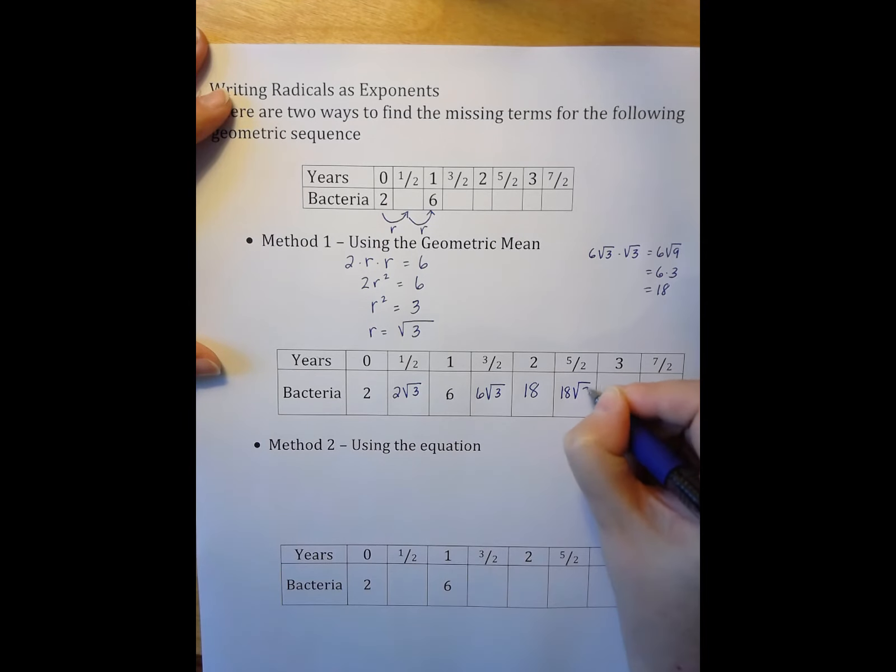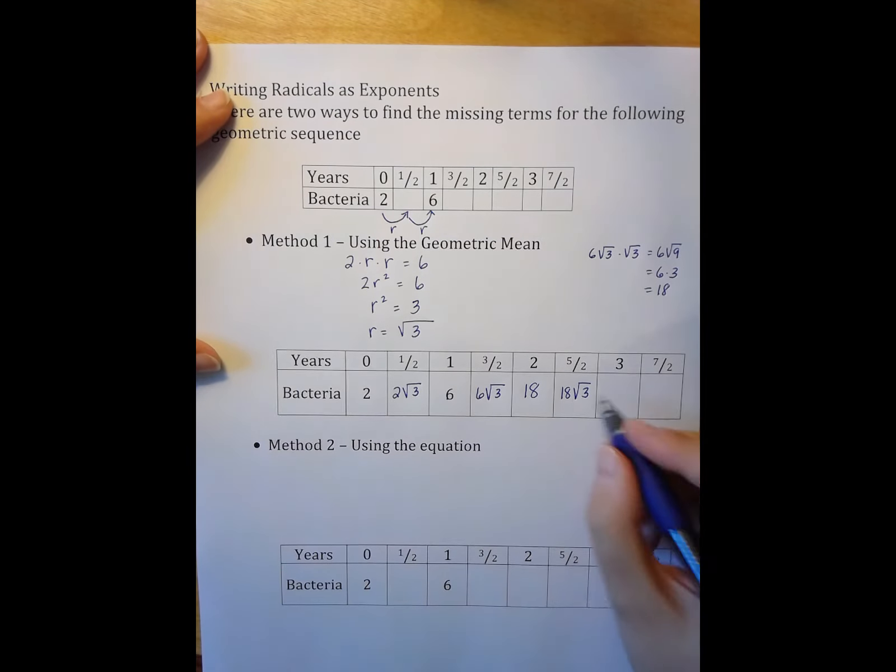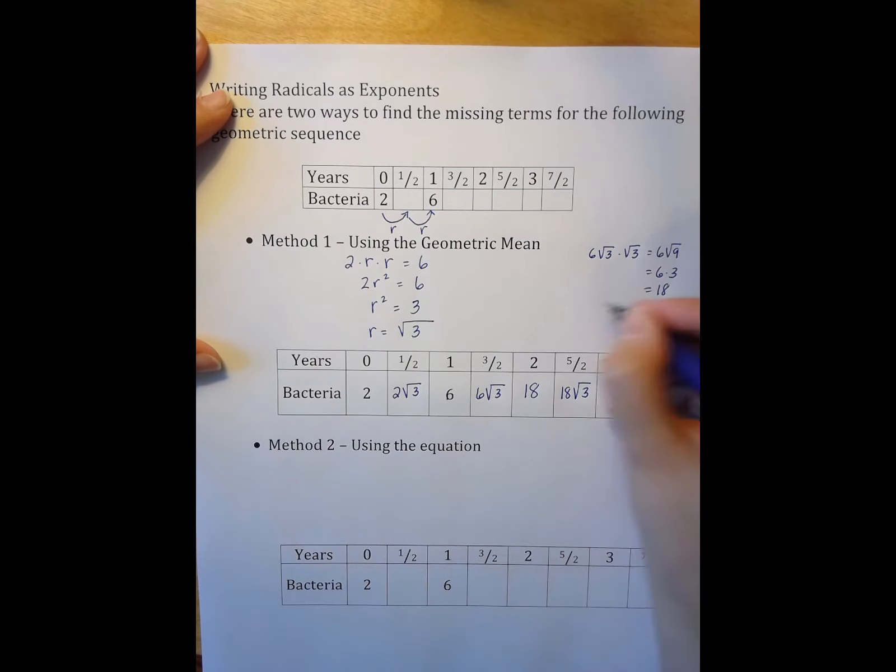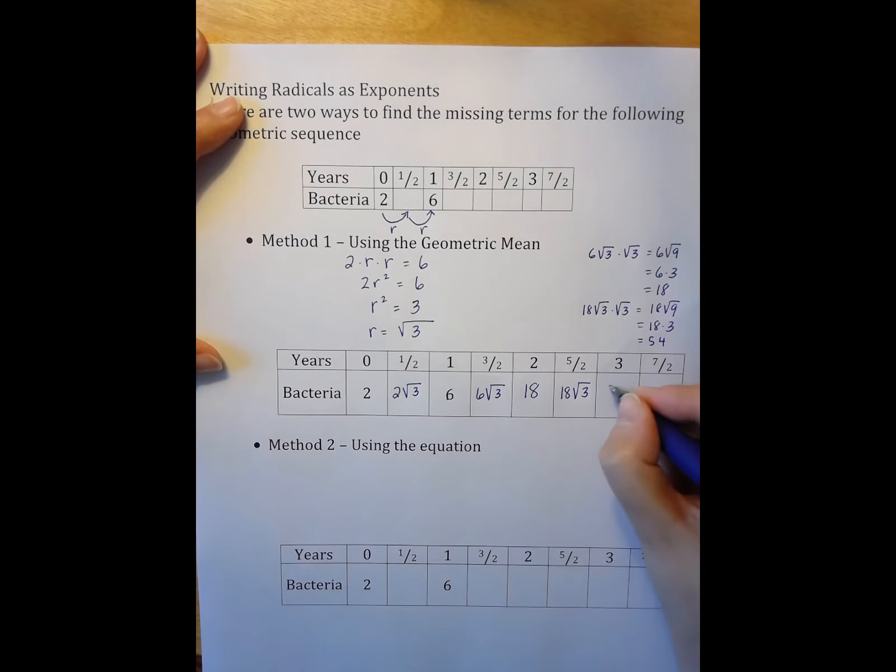6√3 times √9, which is 8 times 3, which is 54. And then 54 times √4 times √3 is 54√3.